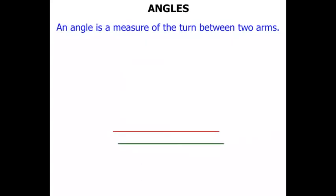So let's consider two arms there, a red one and a green one. Let's put the red one on top of that green one and start turning it. Now the amount of turn there is known as the angle.